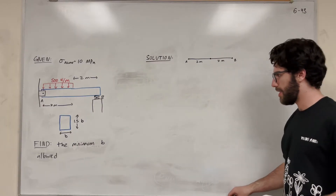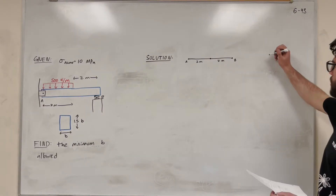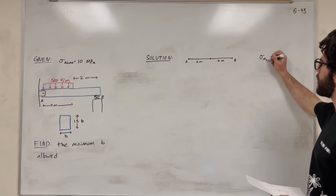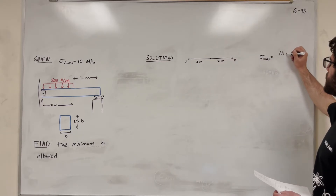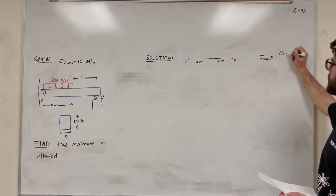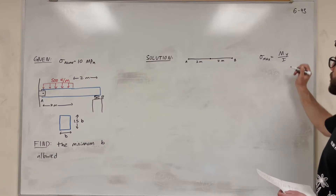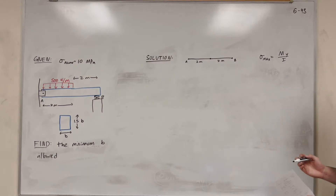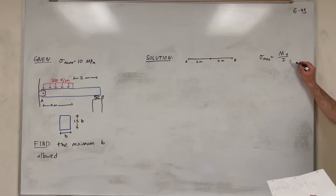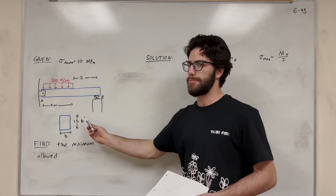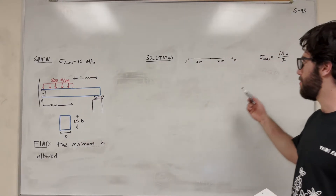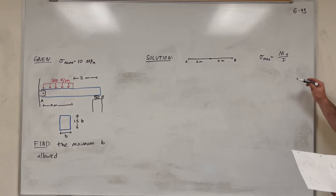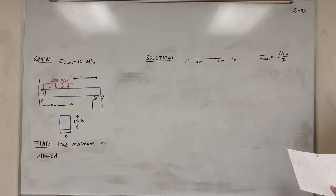How are we going to do that? We're going to be using the equation that the maximum bending stress, which is given to us, is equal to moment times Y over moment of inertia. The moment of inertia has to do with our cross-sectional area, which has B in it. So this is going to be where B shows up in the equation.